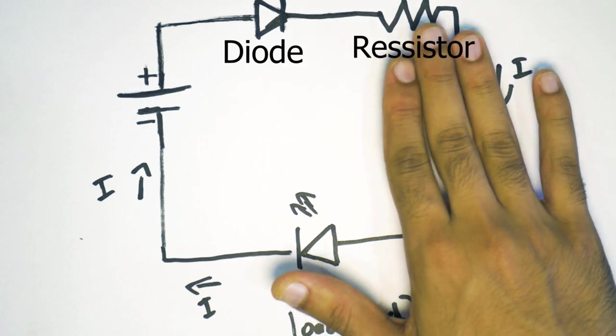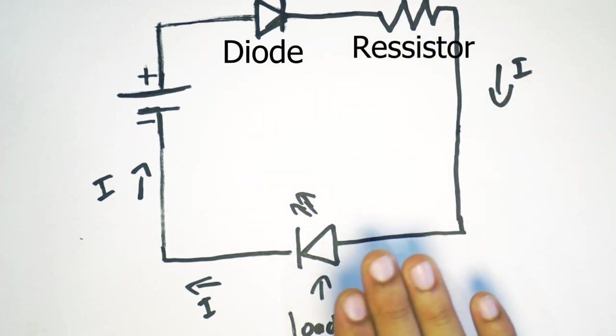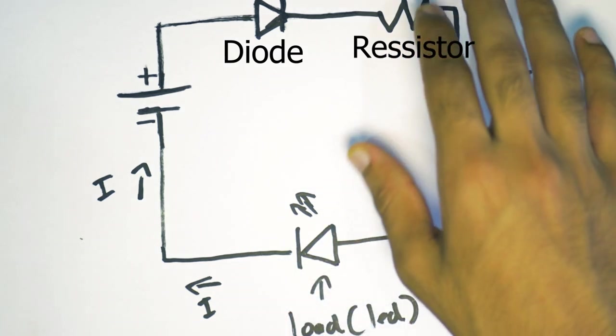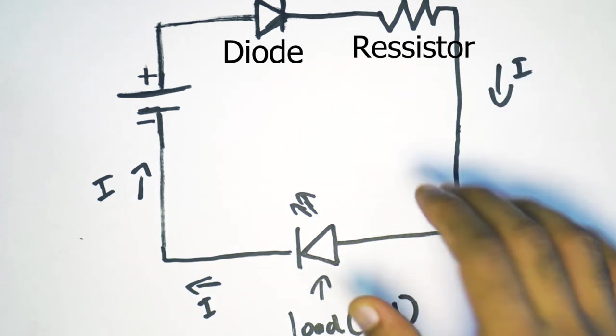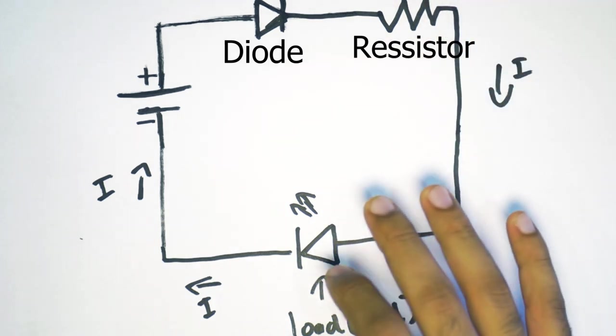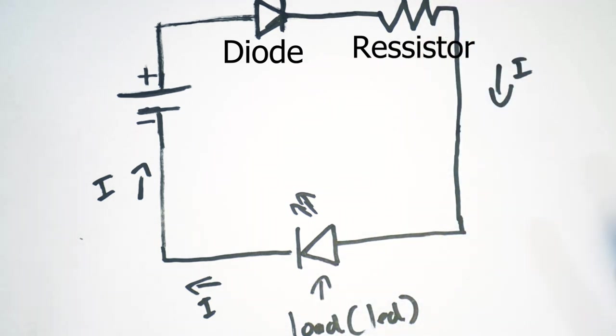We also have a resistor. This is just to limit the current because in our circuit, we'll be using our LED. But again, the load or the electronics that we're driving can be substituted with the resistor and the load as per the electronics that you're trying to drive.